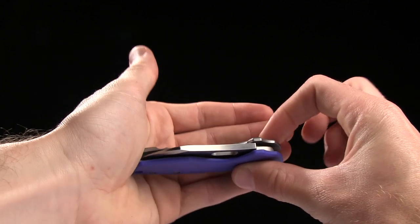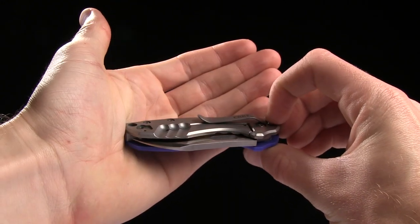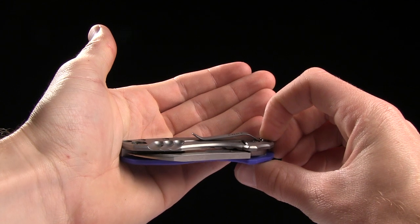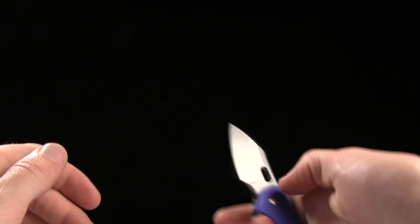And you've got a pocket clip for tip down or tip up right handed carry. And it opens with the thumb hole.